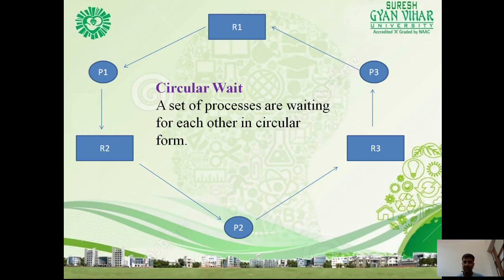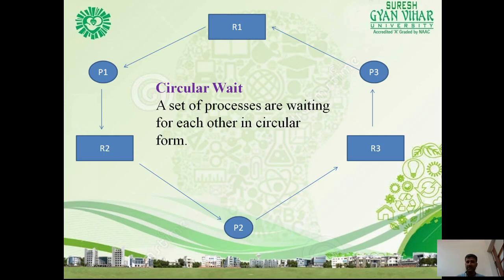No preemption means a resource cannot be preempted from a process by force. A process can only release a resource voluntarily after its execution is completed. For example, process P2 cannot preempt resource R1 from process P1; R1 will only be released when process P1 voluntarily finishes its execution. We are not able to force release of resources for another process.